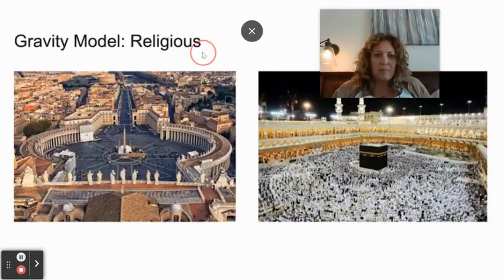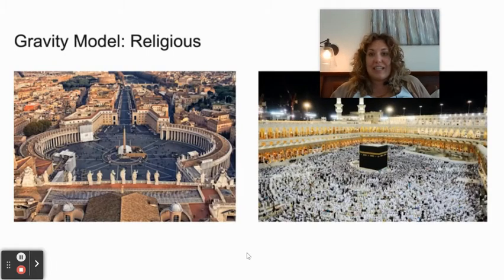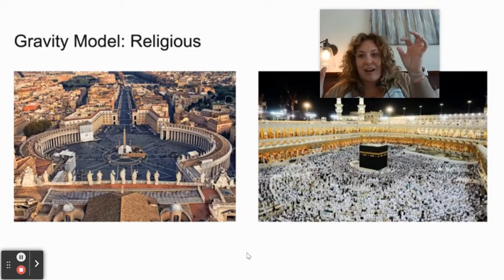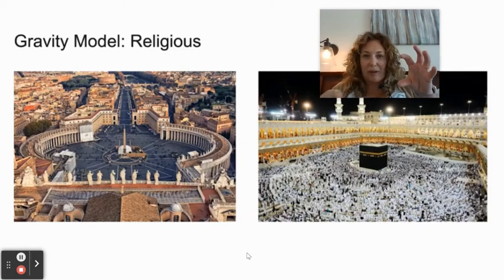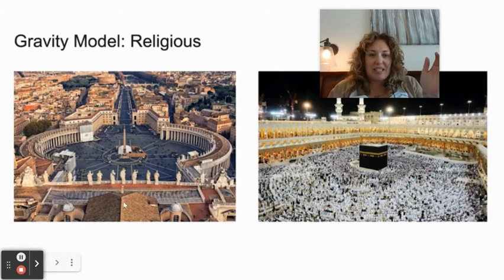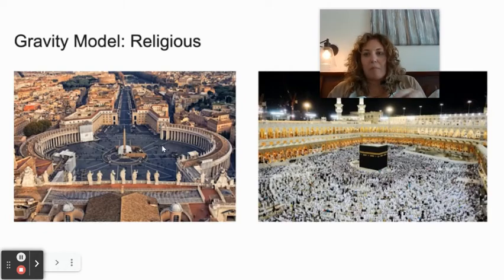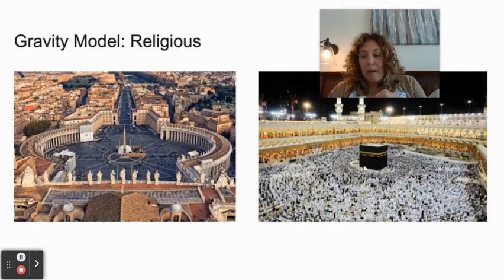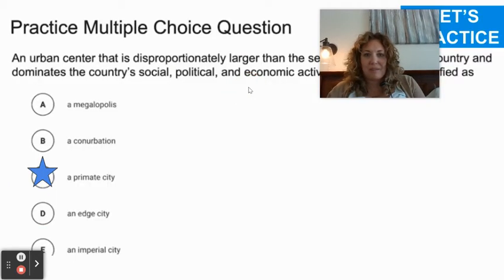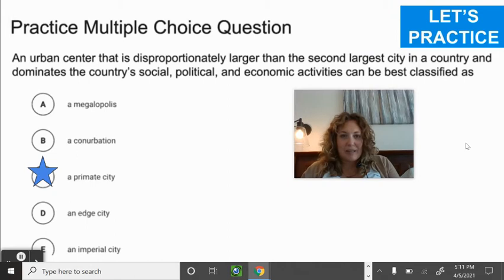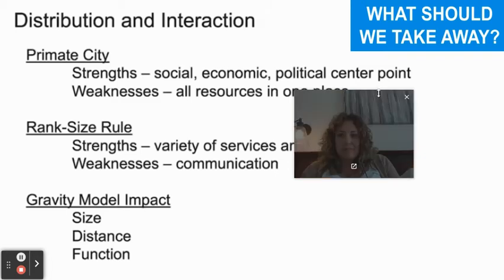Religious centers also demonstrate gravity: the Vatican attracts Catholics from all over Europe and the world. The Mosque in Mecca, Saudi Arabia attracts Muslims from all over the world. There's a gravitational pull between a city with religious importance and the cities around it.